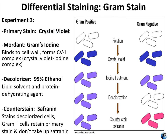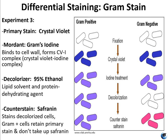After staining with crystal violet for one minute, rinse with water. Then add iodine on top of your cells, leave for a minute, and rinse with water. At this point, whether you have a gram-positive or gram-negative cell, they all look the same — purple. The differential step is the decolorizing step. Tilt the slide at an angle, add 95% ethanol dropwise, and only add it until the drop coming off the slide is clear. As soon as that drop is clear, rinse immediately with water.